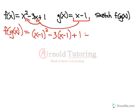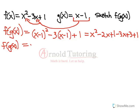If we simplify this we can do FOIL and we get x squared minus 2x plus 1 minus 3x plus 3 plus 1 and this will simplify to f of g of x equals a nice quadratic of x squared minus 5x plus 5.